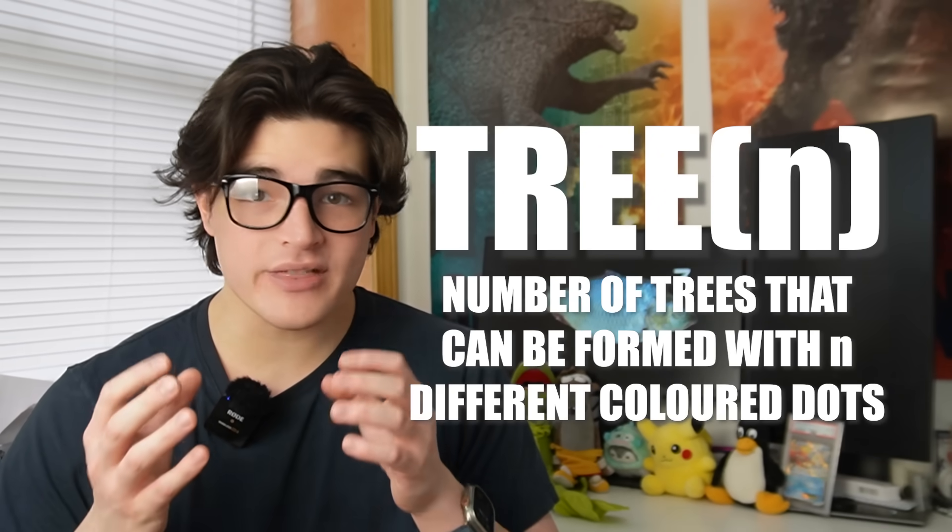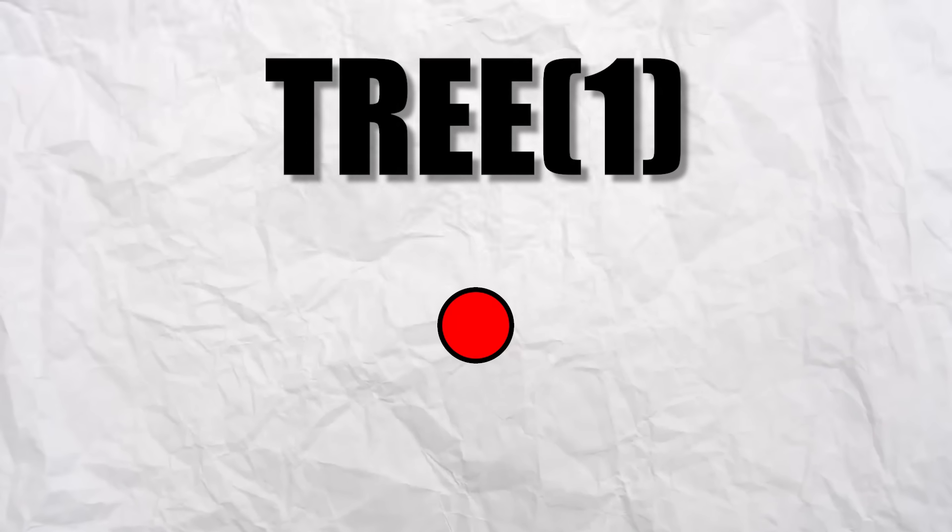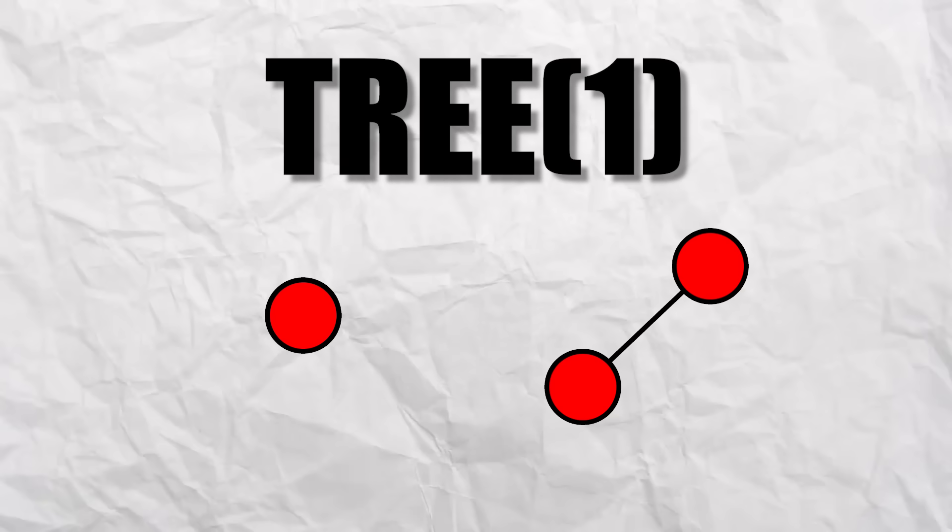That's because the nearest common ancestor of the red dot and blue dot is the white dot. With that being said, we can form the function tree N, which is the number of trees that can be formed with N different colored dots.